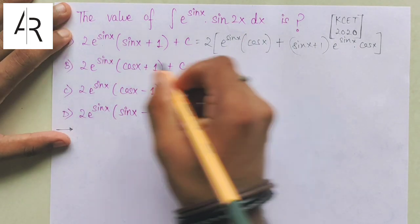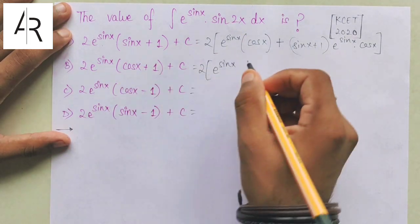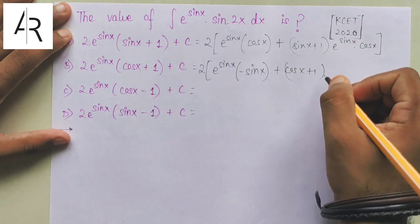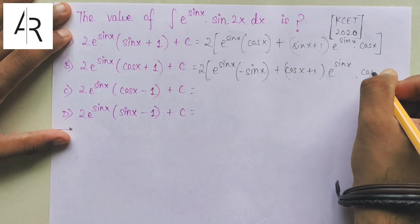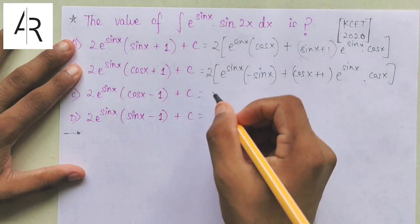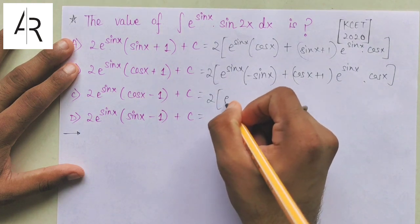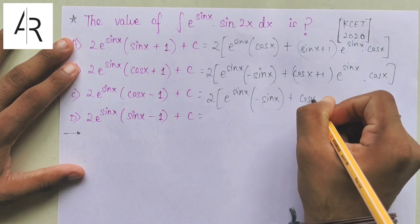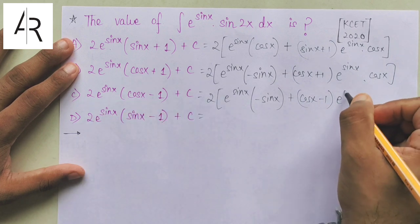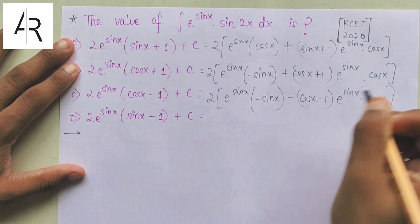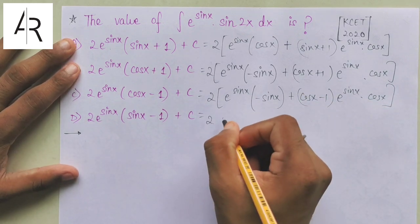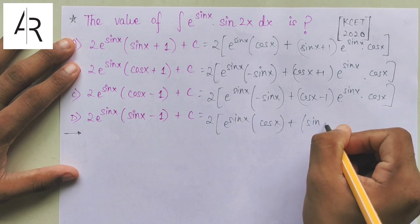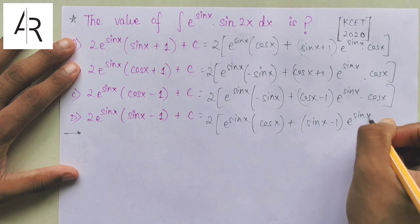For option B, keeping 2 outside: e^(sin x) stays, and (cos x + 1) differentiates to −sin x, plus keeping (cos x + 1) and differentiating e^(sin x) using chain rule gives e^(sin x)·cos x. For option C, similarly: e^(sin x) with (cos x − 1) differentiating to −sin x, plus (cos x − 1) times e^(sin x)·cos x. For option D, keeping e^(sin x), (sin x − 1) differentiates to cos x, plus keeping (sin x − 1) and differentiating e^(sin x) gives the same chain rule result.